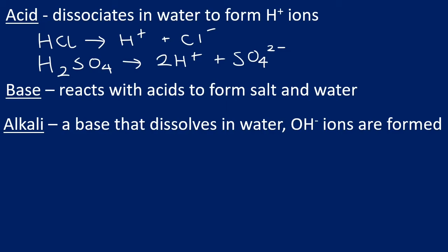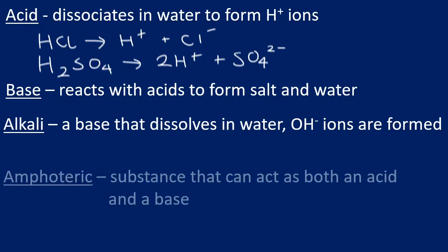Finally, amphoteric, which is quite an unusual property. It's when a substance can act as both an acid and a base. Usually it would be classified as either an acid or a base, however something that's amphoteric, such as alumina, can act as both an acid and a base.